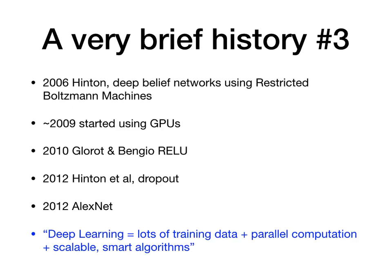That was until about 2006 when Geoffrey Hinton worked out a way to train neural networks that had many layers. What he developed was a method called deep belief networks, which used restricted Boltzmann machines. We talked about Boltzmann machines earlier — they were like a probabilistic approach to neural networks. Using restricted Boltzmann machines and building them up into a deep belief network, he could build these larger neural networks that could solve problems that the previous backpropagation neural networks couldn't solve.